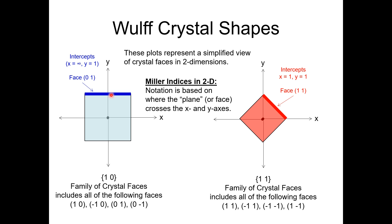Here you can see plots for the Wulff crystal shapes. These two plots represent a simplified view of crystal faces in two dimensions — x and y. Miller indices in 2D use notations based on where the planes cross the x and y axes.